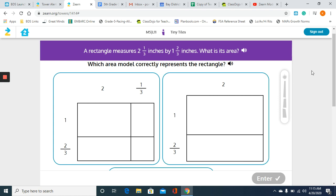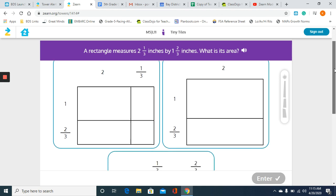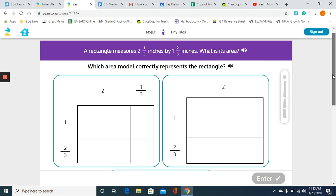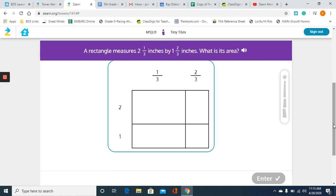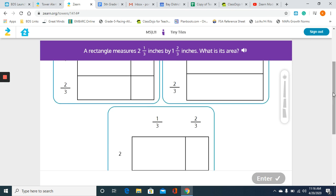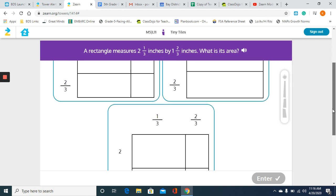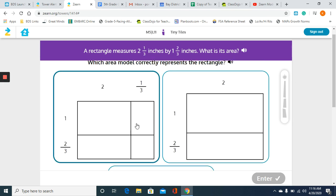I am going to go ahead and double check the other options as well. The second one has 1 and 2/3 but it does not have 2 and 1/3, it only has 2. The bottom one has 2 and 1/3 and then 1 and 2/3 but they are not correctly lined up. They split the fractions apart from their whole numbers.